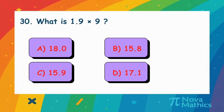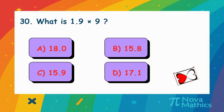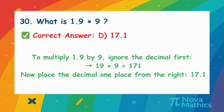29. What is 1.9 times 9? Let's multiply 1.9 by 9. First, think of it without the decimal. 19 times 9 is 171. Now put the decimal back one place. That's 17.1.